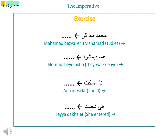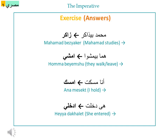Let's do an exercise. The first sentence: محمد بيذاكر — 'Mohamed is studying' — the imperative is ذاكر. The second sentence involves walking; the single imperative is امشي, and the plural is امشوا — you add او at the beginning... at the end of the verb. Then: انا مسكت — the imperative is امسك. The answers are: ذاكر، امشي، امسك.